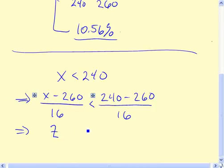Over here on the right side, this is negative 20 divided by 16, and that's really minus 1.25.